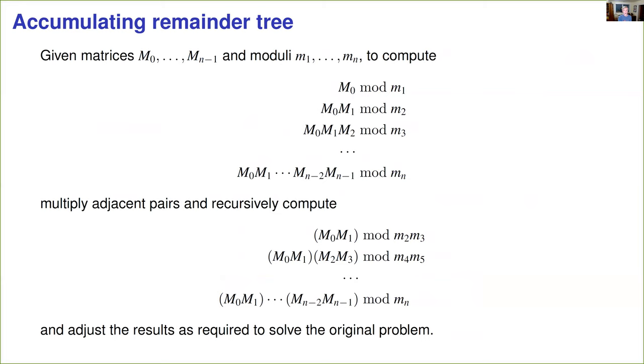So we've reduced the problem essentially to computing a bunch of partial products of a sequence of matrices reduced modulo a certain sequence of moduli. And there's a standard approach to doing this known as accumulating remainder tree introduced by David Harvey who developed the very first average polynomial time algorithm. And it works as follows. So given a sequence of n matrices and a sequence of n moduli, we want to compute all of the partial products modulo the corresponding modulus. And one can do this recursively by pairing up matrices and pairing up moduli and reducing to a problem half the size. Solve the sub problem. And you can then solve your original problem by just adjusting the result. So you might need to do one more modular reduction, or do one more matrix multiplication followed by a modular reduction to get the final result that you want.